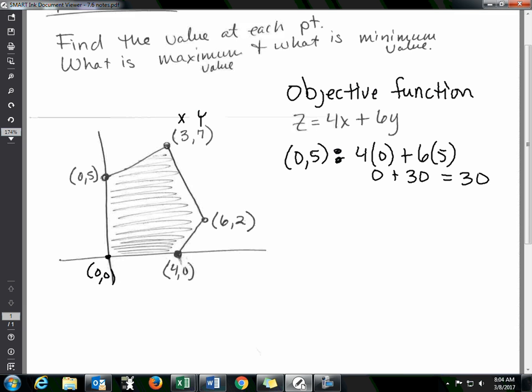And then at 3,7, we have 4 times 3 plus 6 times 7, so that's 12 plus 42, which equals 54.